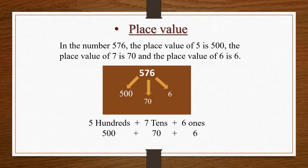Students, here you can see a picture showing the place value of each digit. The number given is 576: 5 hundreds plus 7 tens plus 6 ones. In the number 576, the place value of 5 is 500, the place value of 7 is 70, and the place value of 6 is 6.